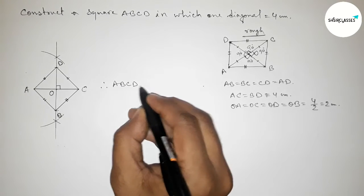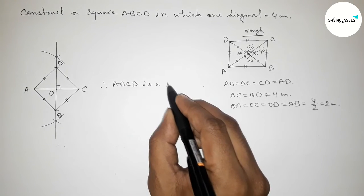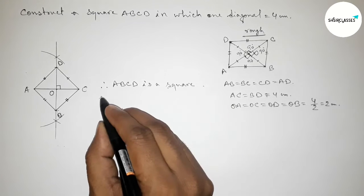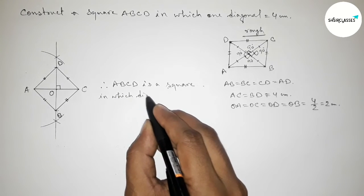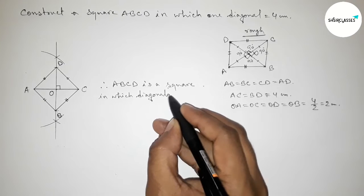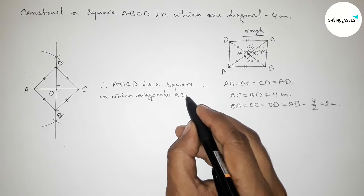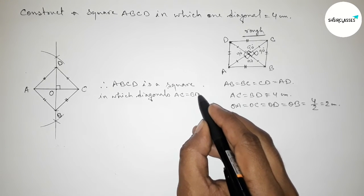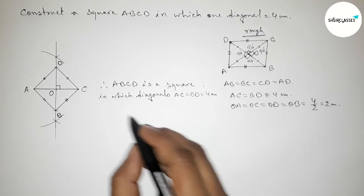Therefore, ABCD is a square in which the two diagonals AC equals to BD equals to four centimeter, and the length of each side equals to approximately 2.8 centimeter.